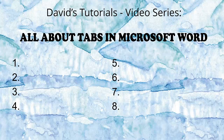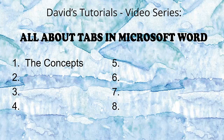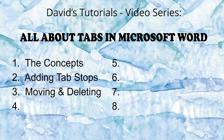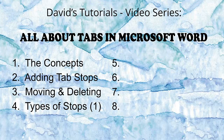There are eight more videos in this series. Here's what we'll be covering in each one. In video number one, we'll cover understanding the concepts of tabs. Video number two, how to add tab stops. Video number three, moving and deleting tab stops. Video number four, the types of tab stops — in this one, it will be the common ones. In video number five, the extra types of tab stops.